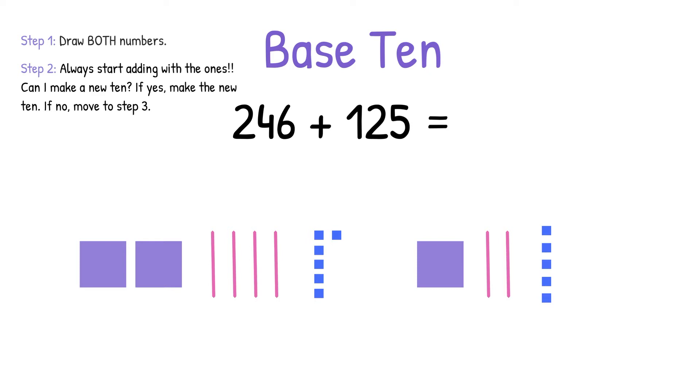So I'm going to circle 4 ones from over here. I'm going to draw my arrow and scoot the 4 ones over to the 6 ones to make a new ten. Next, I'm going to cross them out over here because they're not here anymore, and I'm going to make a rectangle around my new ten.